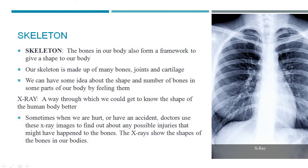The skeleton is basically the framework of the human body and it gives the shape to the human body. The skeletal system is made up of bones, joints, and cartilage, and there are around 206 bones present in the human body.